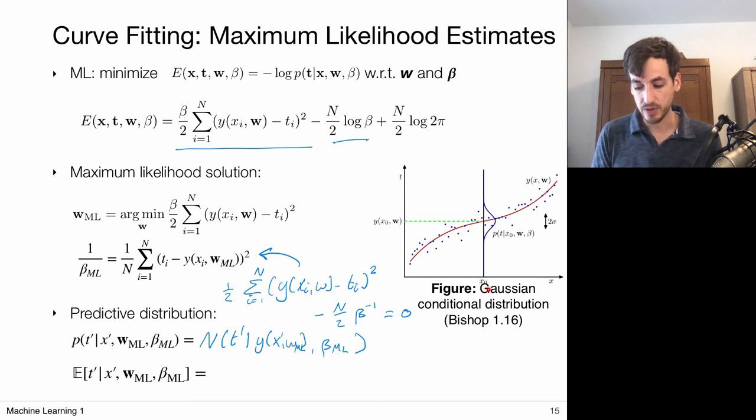So for every data point, I place probabilities on all possible target values. And now if I want to give a point estimate, like I only want to return one target value, the most probable target value, I could take the expected value over this predictive distribution. And since this predictive distribution is a Gaussian, this expected value would give me simply this model y modeled by the maximum likelihood parameters.